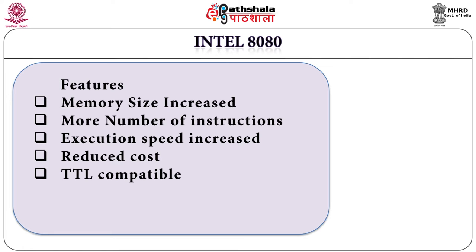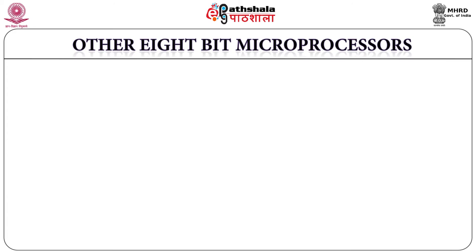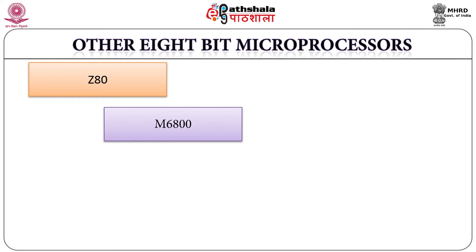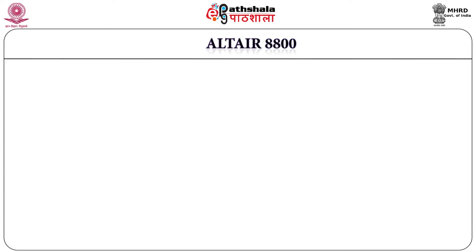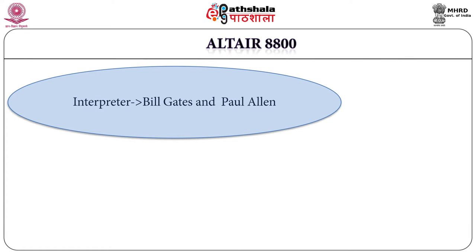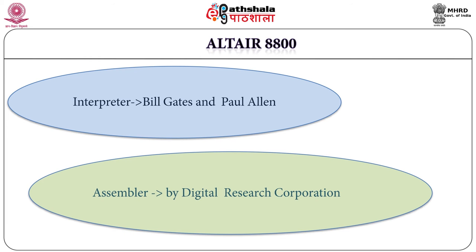With increasing popularity of Intel microprocessors, other companies brought their products to market, namely Z80 by Zilog, M6800 by Motorola and the Altair 8800. The specialty of the Altair 8800 was that its BASIC language interpreter was written by Bill Gates and Paul Allen, while its assembler program was written by Digital Research Corporation. The Altair 8800 was used in the first personal computer.